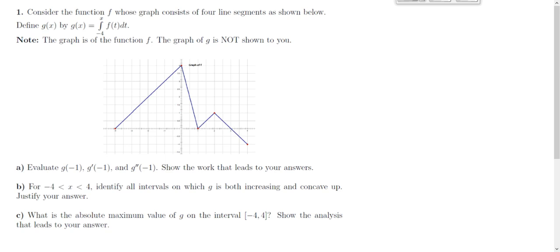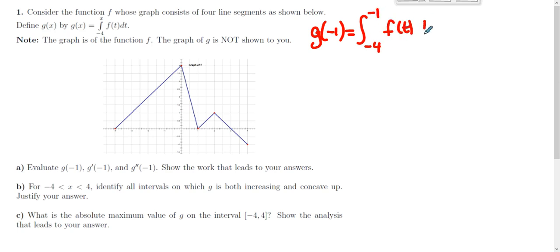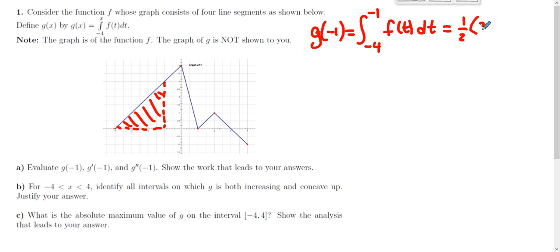We're looking for g(-1), g'(-1), and g''(-1). What is g? g is this function defined as the integral from -4 to x of f(t) dt — the g function we can't see directly. So g(-1) takes -1 and puts it in as the upper limit: the integral from -4 to -1 of f(t) dt. Looking at the f graph, that's the area of a triangle.